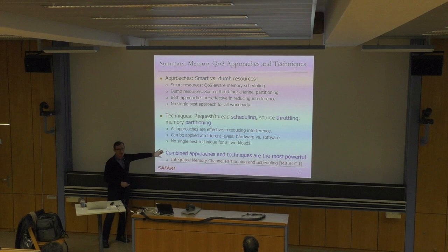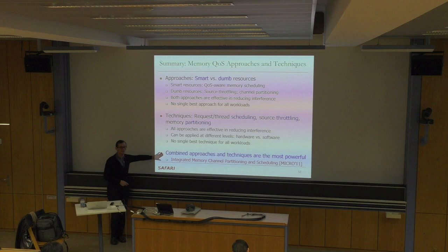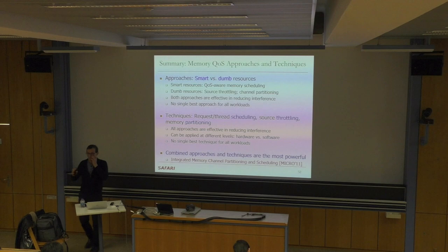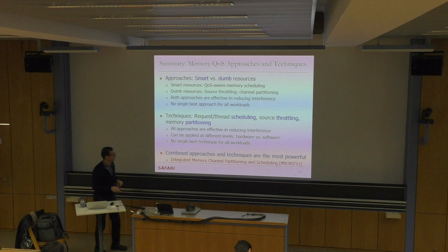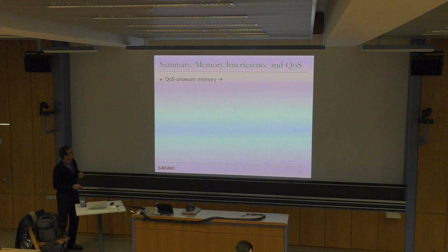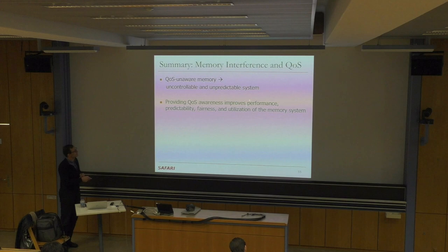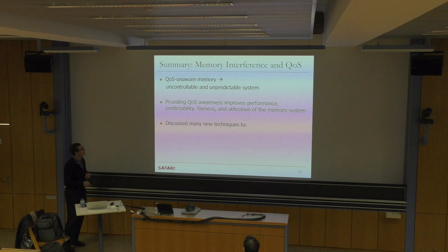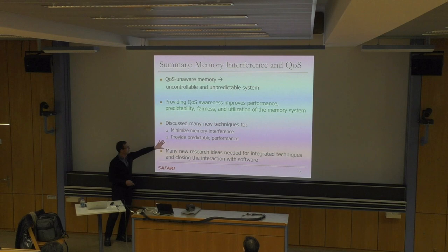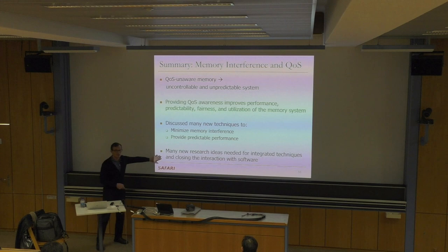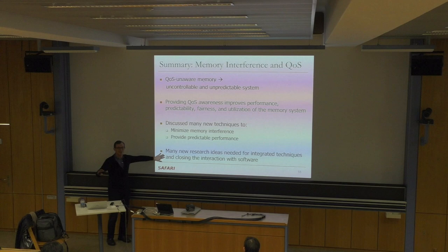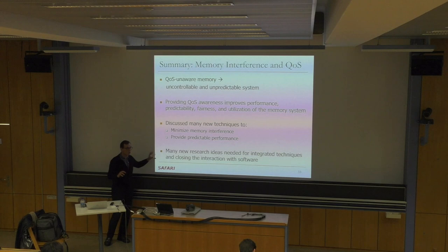QoS-unaware memory leads to an uncontrollable, unpredictable system. Providing QoS awareness improves performance, predictability, fairness, and utilization including power consumption. Combined approaches are the most powerful even though they add more complexity. Managing that complexity is not easy, and more work is needed using less human-driven and more data-driven machine-learning approaches. There are open problems we didn't cover: prefetch handling in scheduling, reads versus writes, and co-design across resources.